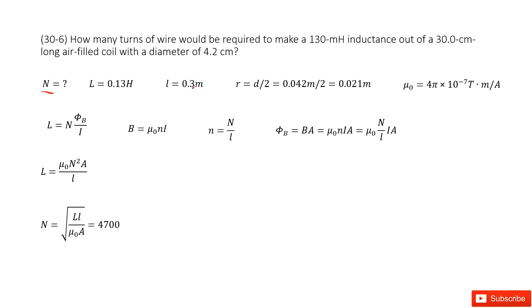The length is 0.3 meters, and the diameter is given. We can write it as radius. So now, how can you connect the inductance with how many turns of the wire?